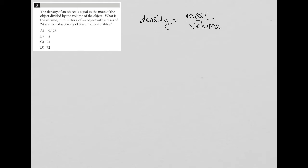What is the volume in milliliters of an object with a mass of 24 grams? They're telling me that mass, which I'll call M, is equal to 24 grams. And the density, which I'll call D, is equal to 3 grams per milliliter, or mL.